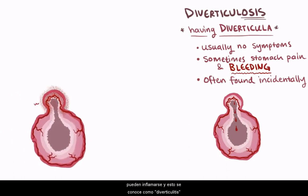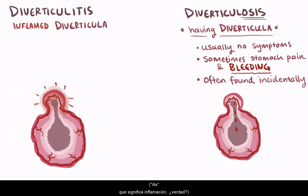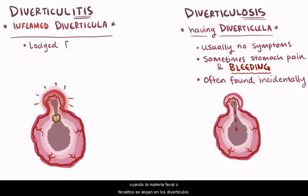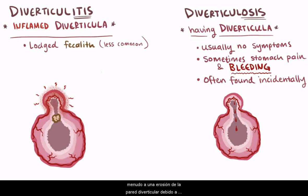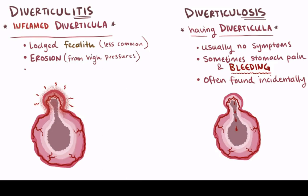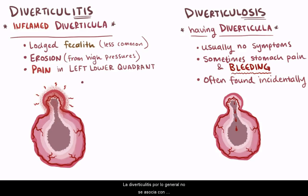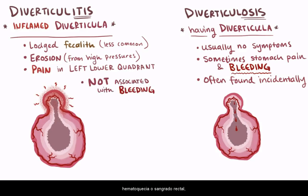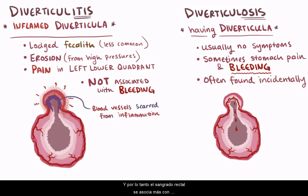Sometimes the diverticula can become inflamed, and this is known as diverticulitis — "itis" meaning inflammation. Although inflammation can happen when fecal matter, or fecoliths, become lodged in the diverticula, this is thought to actually be less common. Inflammation is thought to happen more often due to erosion of the diverticular wall from higher luminal pressures. Erosion and inflammation most commonly causes pain in the left lower quadrant. Diverticulitis is usually not associated with hematochesia or rectal bleeding, since the blood vessels become scarred from inflammation, and therefore rectal bleeding is more associated with diverticulosis.